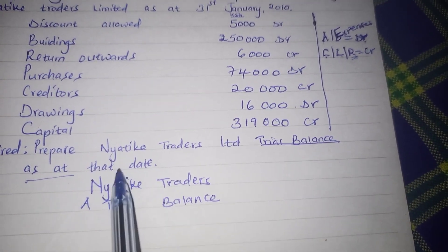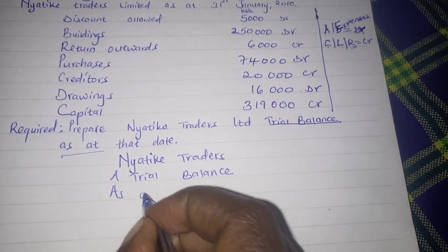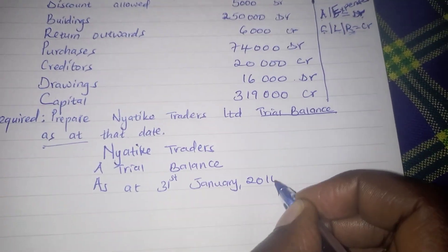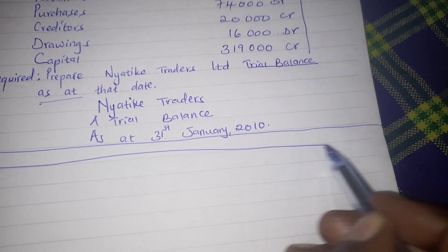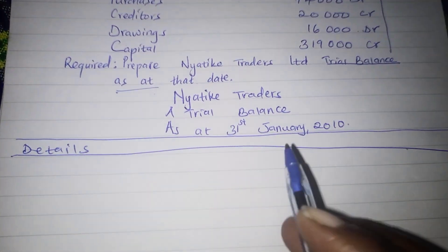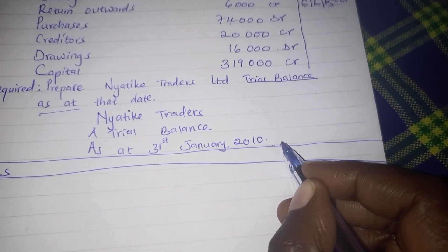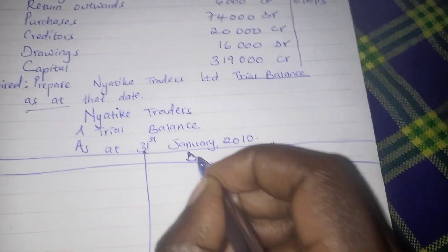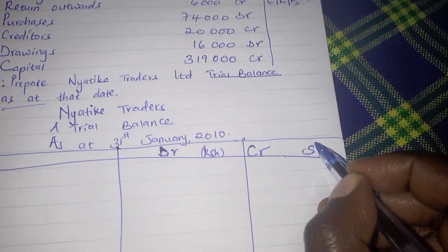As at which date? The date when the balances were extracted, which is 31st January 2010. Then we have another column for the details, where we will be recording the accounts. We also have a column for recording the debit amounts and another column where the credit balances will be recorded.